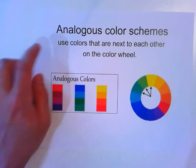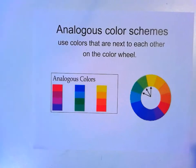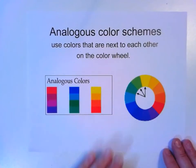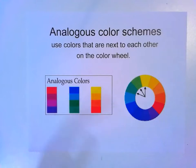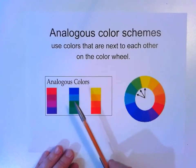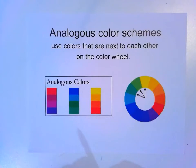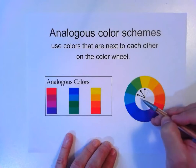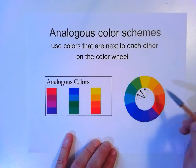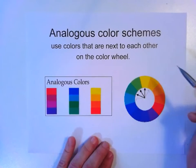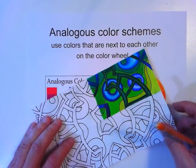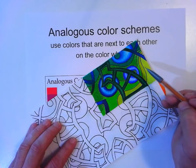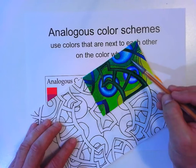The next one is probably new. When we took that pretest on the elements of art, a lot of us got this one wrong — and that's fine because you were never taught this. Analogous color schemes are colors that are next to each other on the color wheel. It can be three to five colors beside each other. So what I have here is an analogous color scheme: yellow-green, green, blue-green, and blue.